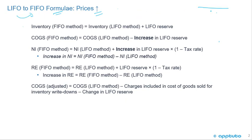If we look at our inventory T-account, when we're using FIFO — first in, first out — and prices are rising, what's going to be left in our inventory is going to be our most recent purchases at the higher price. So our inventory under the FIFO method is higher than under the LIFO method.